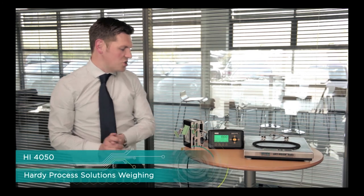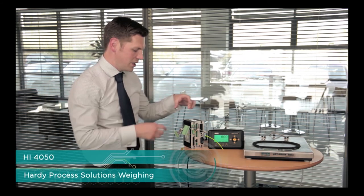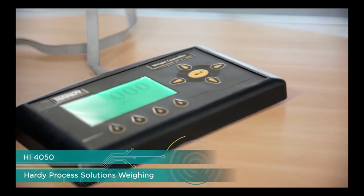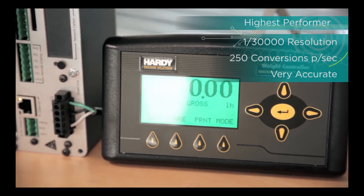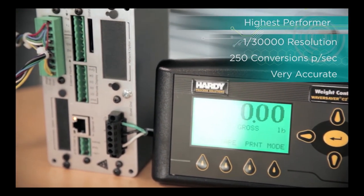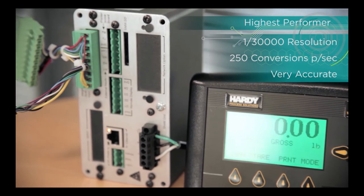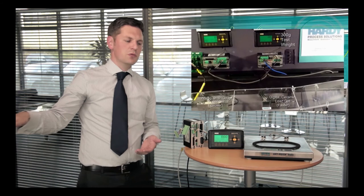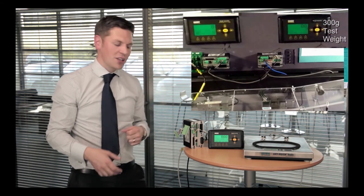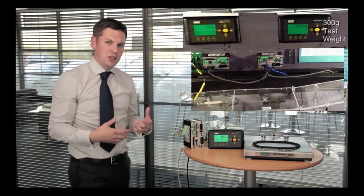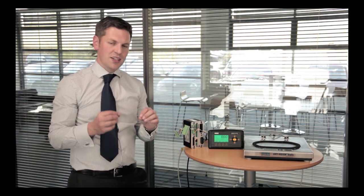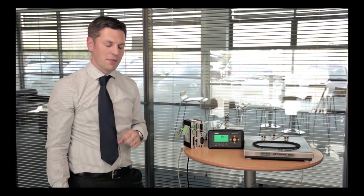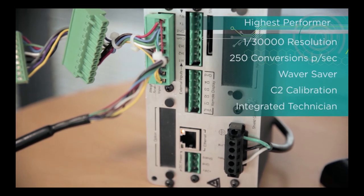This instrument here is the HI4050. It's available in this form factor with an optional screen and is the highest performance that Hardy have got. It does 1 in 30,000 resolution and up to 250 conversions a second. That's really good if you've got a dynamic weigh application, like a weight moving across a conveyor, that kind of thing. It's also good if you need lots of accuracy. With the right sensors, we can really get some precision accuracy with this one.